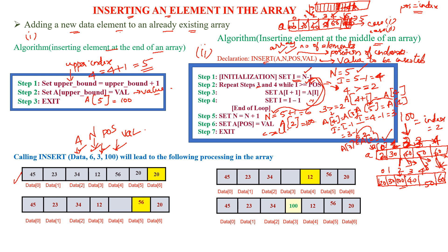In the first step, the length is 6, so indices are 0 through 5. The element at index 5 is shifted to index 6, then 56 is shifted to index 5 (a[4] shifted to a[5]), then 12 shifted to a[4] (a[3] shifted to a[4]). The third position to be replaced is index 3 — at position 3, we insert 100.